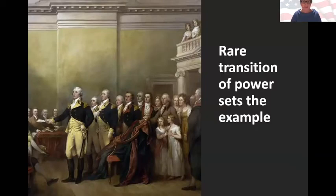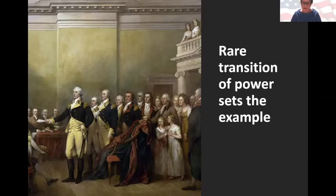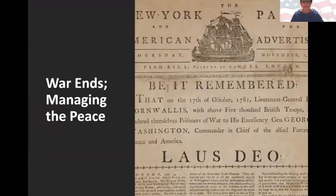This famous image, which hangs in the Capitol Rotunda, depicts General George Washington resigning his commission as Commander-in-Chief of the Continental Army in 1783 at the end of the Revolutionary War. His voluntary action has been described as one of the nation's great acts of statesmanship. That transition — stepping away from power — sets the stage for our understanding of the transfer of power.